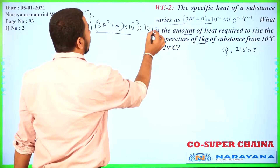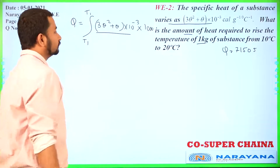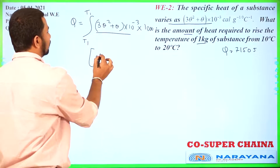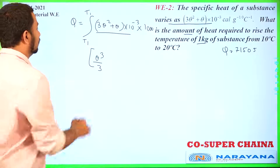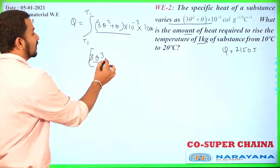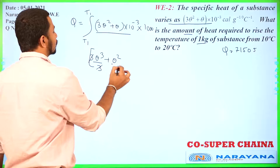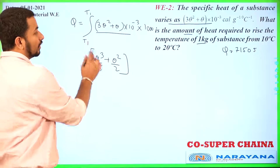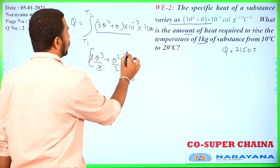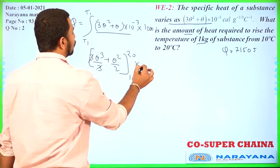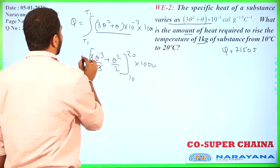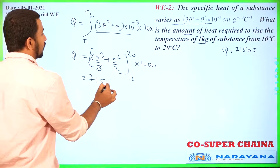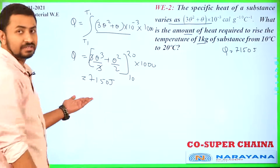It will be 10,000 kg. Just do the integration. The 3 and 3 will cancel out and we have θ² by 2. Put the limit of integration from 10 to 20 to 1000. Solve this and you will get the answer as 7150 joule. That will be the answer of this question.